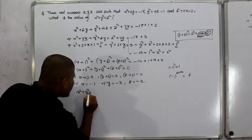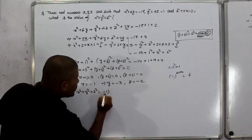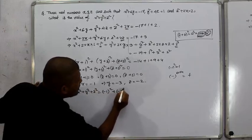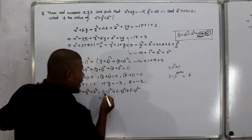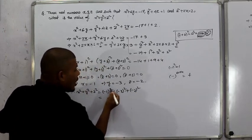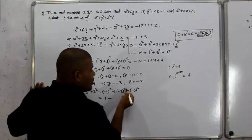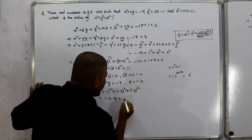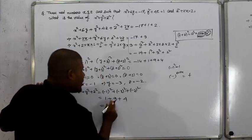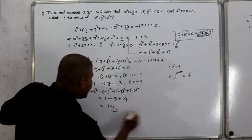Therefore, x squared plus y squared plus z squared equals minus 1 squared plus minus 3 squared plus minus 2 squared. This equals 1 plus 9 plus 4, which equals 14.